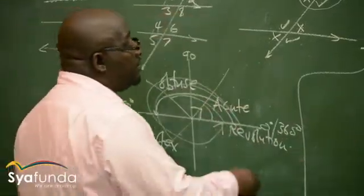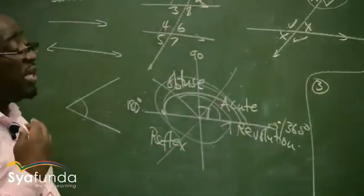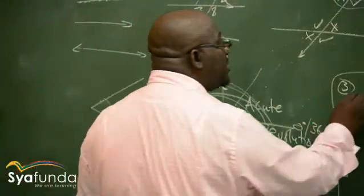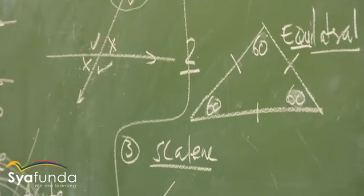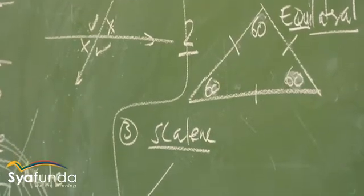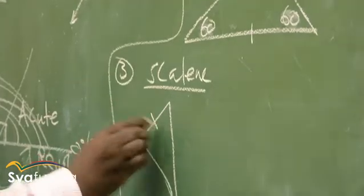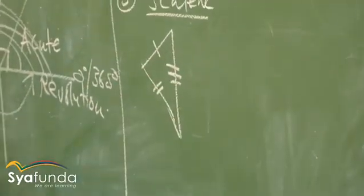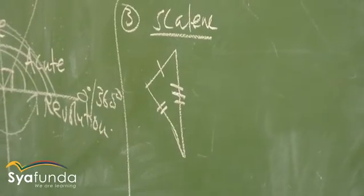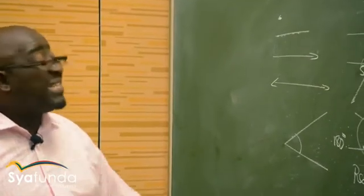The third type is the scalene triangle, which is the opposite of equilateral. In a scalene triangle, no sides are equal and no angles are the same — nothing is equal.